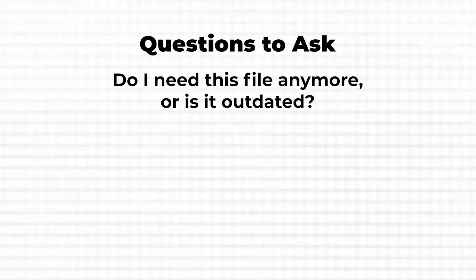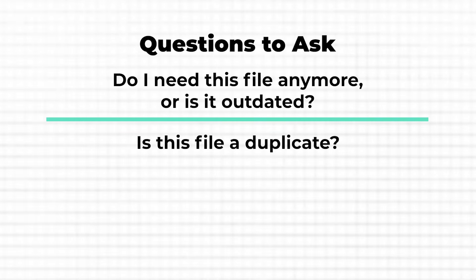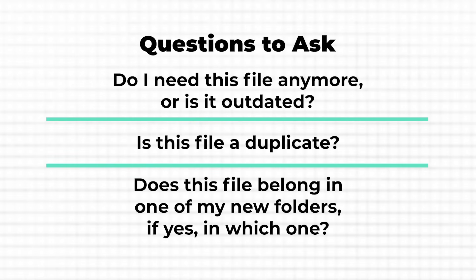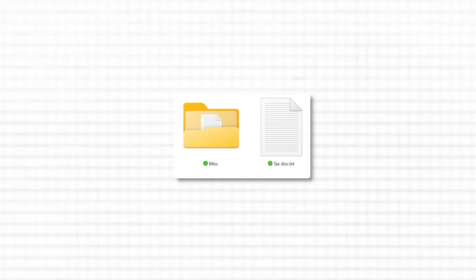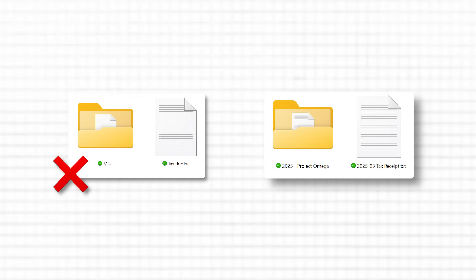In other areas, look through the files and ask yourself: Do I need this file anymore, or is it outdated? Is this a duplicate of something I've already saved elsewhere? Does this file belong in one of my new folders, and if yes, which one? For files that are no longer needed, delete them immediately. If you're unsure about a file's importance, move it to a temporary folder labeled something like 'to review later.' Once you've deleted unnecessary files, start filing the remaining ones. Use clear, descriptive names — instead of vague labels like 'stuff' or 'misc,' try something like '2025 project name' or 'receipts taxes 2025.'